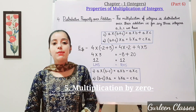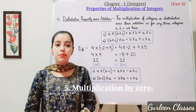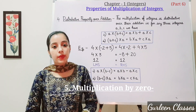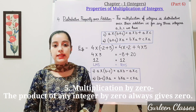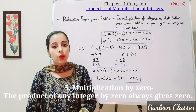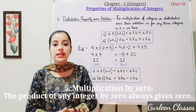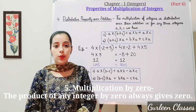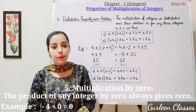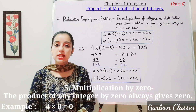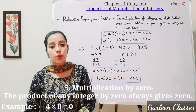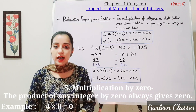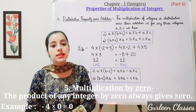Number 5: multiplication by 0. The product of any integer multiplied by 0 always gives 0. Example: minus 4 multiplied by 0 gives 0.